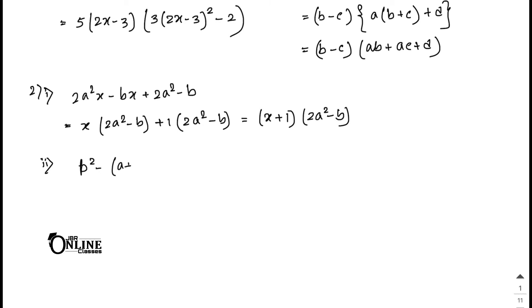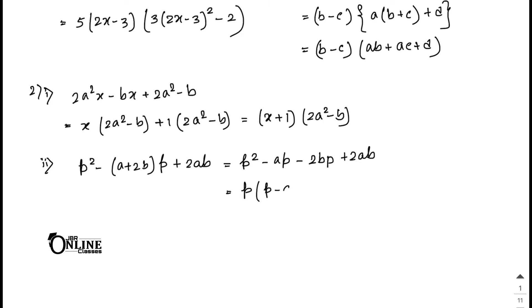Sum number 2.2: p² minus (a plus 2b)p plus 2ab. Expand: multiply p with (a plus 2b) to get ap plus 2bp plus 2ab. Take p common from first two terms giving p(p minus a), and take 2b common from the last two terms giving 2b(p minus a). Answer: (p minus a)(p minus 2b).